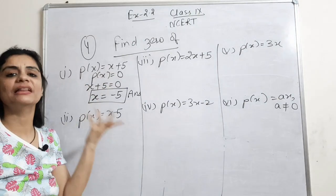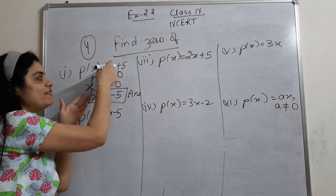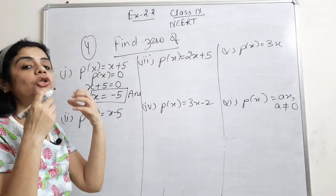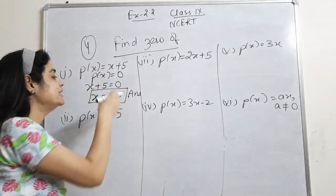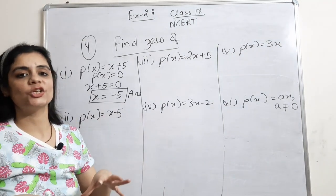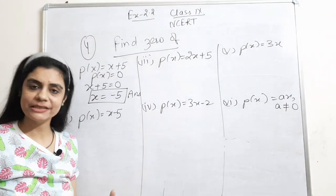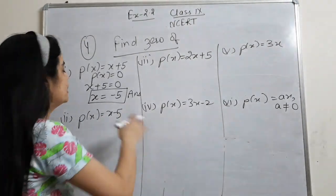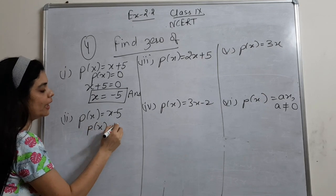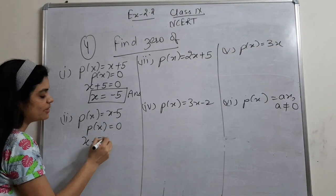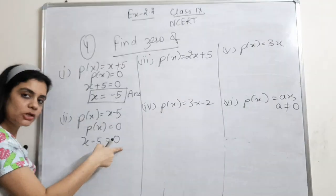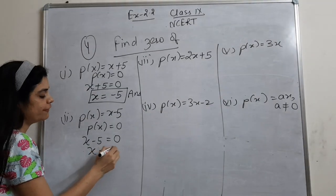What does it mean? If I put minus 5 here, minus 5 plus 5 is 0 — so that confirms it. Second part: set p(x) = 0, so x minus 5 = 0, meaning x = 5. Third part: 2x + 5 = 0, so 2x = minus 5, giving x = minus 5 upon 2.